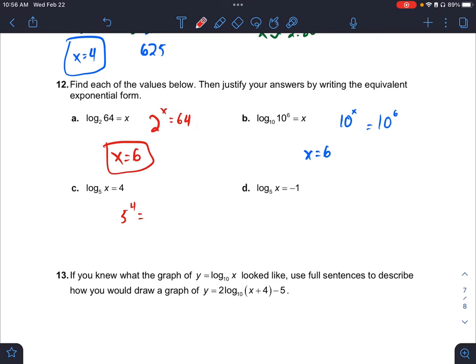A little bit different with these last ones. I get 5 to the 4th is equal to x. That's when I can actually just type in my calculator. x is 625. And the last one here, 5 to the negative 1st is equal to x. And x is going to equal 1 5th or 0.2. Either one of those is fine. Make sure you look back at your notes for these in those forms that we looked at.